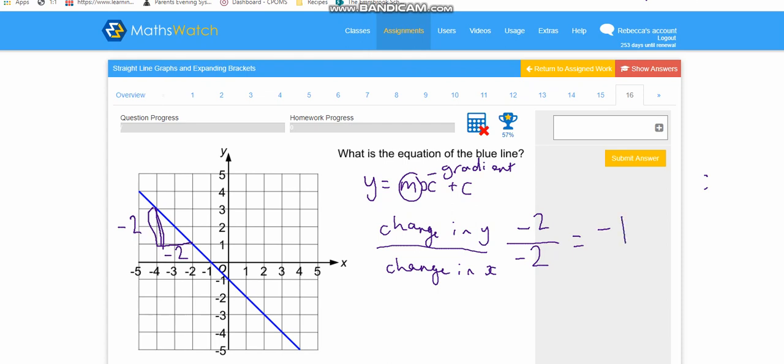Now minus 2 divided by minus 2 equals minus 1. So therefore we would know that y equals minus 1x. But we don't need the 1, okay, so we would just write y equals minus x, and then we want plus c. Okay, but in this case, where does it cross the y-axis? Well, it crosses the y-axis here, which is actually minus 1. Okay, so a plus and a minus when together makes a minus, so we would have minus 1 there.